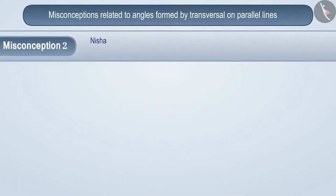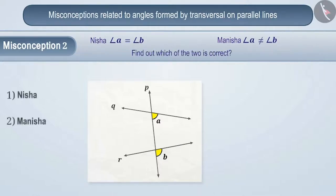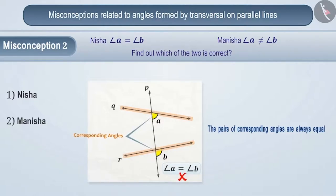Misconception 2. Nisha and Manisha are considering the following figure. Nisha believed that angle A is equal to angle B, while Manisha believed that angle A is not equal to angle B. Some children memorize that the pair of corresponding angles are always equal. They ignore that line P and line Q are not parallel in the given figure, and think that angle A and angle B are corresponding angles, so they are equal. But this is a misunderstanding.